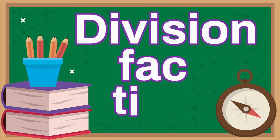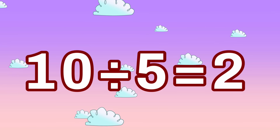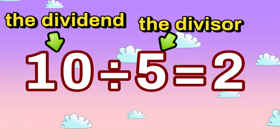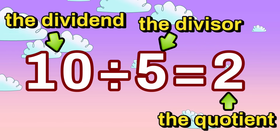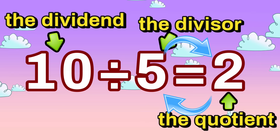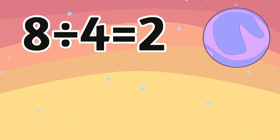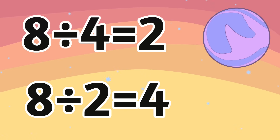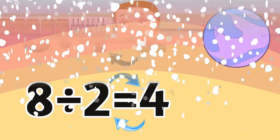It's division fact time. When you have a division problem, the total number is called the dividend. The number of groups you are splitting it up into is called the divisor. And the answer, as we've already talked about, is called the quotient. A cool thing about division is you can switch the divisor and the quotient and the division problem remains true. For example, eight divided by four equals two, but also eight divided by two equals four.